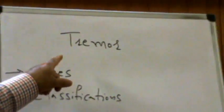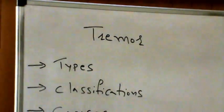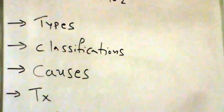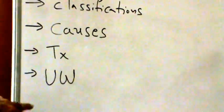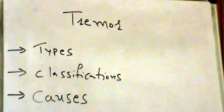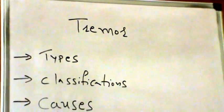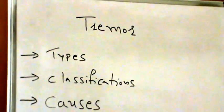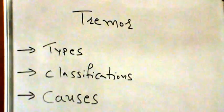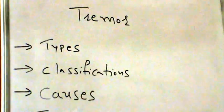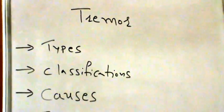Hi there and welcome back. Let's review tremor today. We'll look into the meaning, types, classifications from a different perspective, causes, treatment, and how do we underwrite. A tremor is an unintentional and uncontrollable rhythmic movement of one part or one limb of your body. A tremor can occur in any part of the body and at any time.